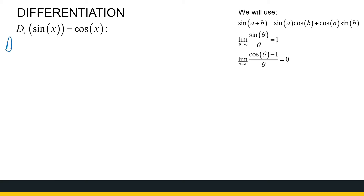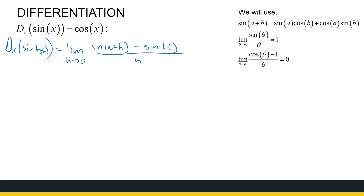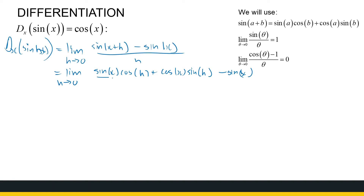The derivative of sine of x — we start with the definition of the derivative, which is the limit as h approaches zero of sine of x plus h minus sine of x, all divided by h. That's the limit as h approaches zero, and we write sine of x plus h using our sum formula.